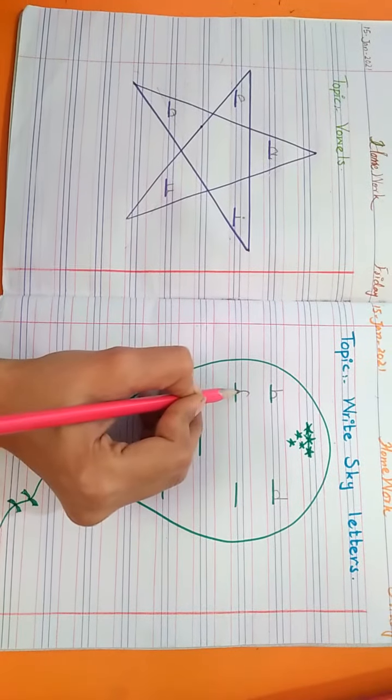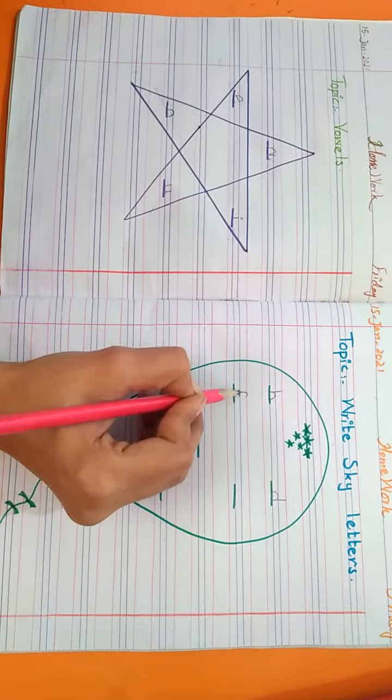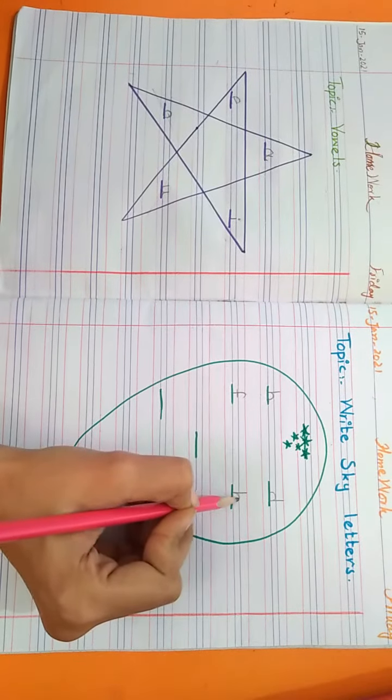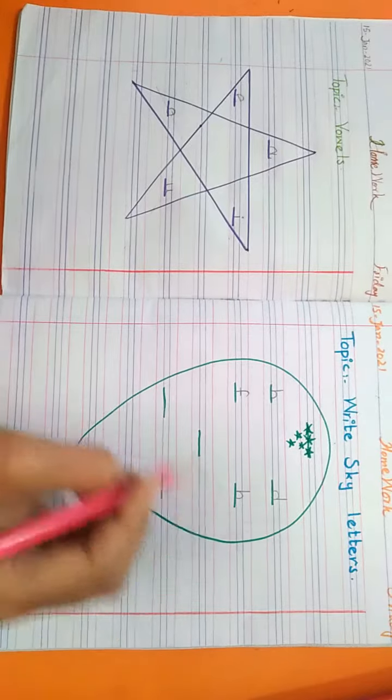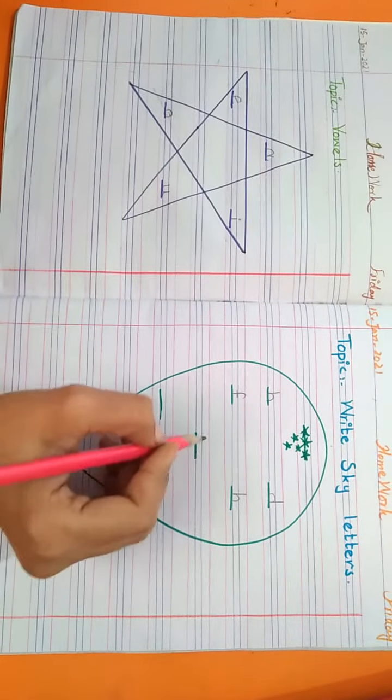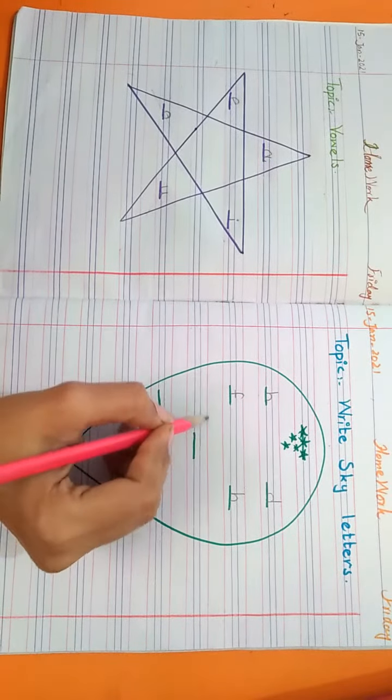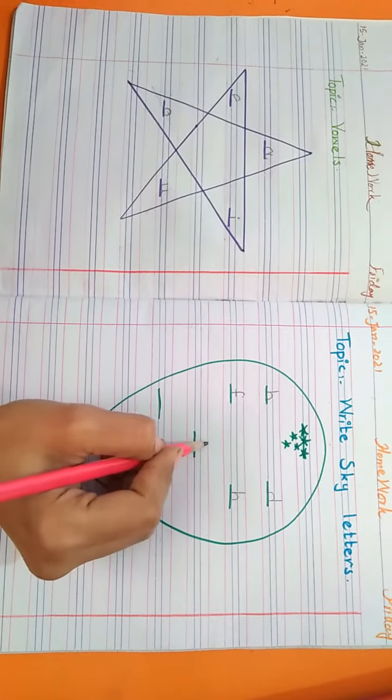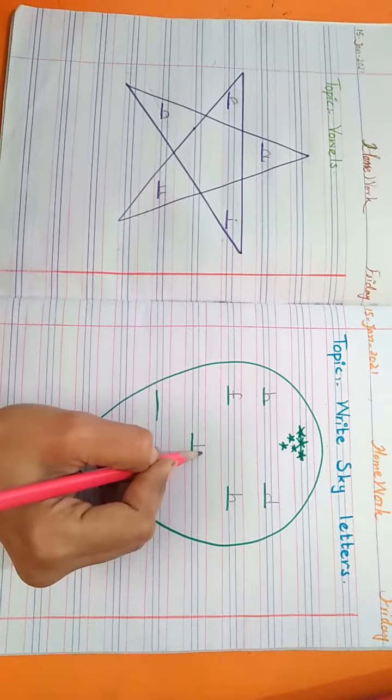The third is F. Fourth is H. You can see all these letters I am writing on upper three lines. Fifth is K.